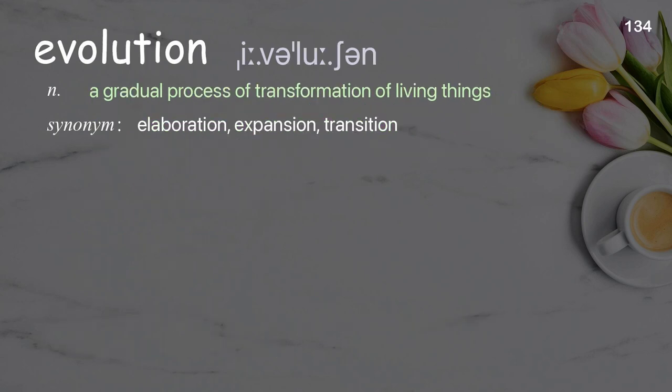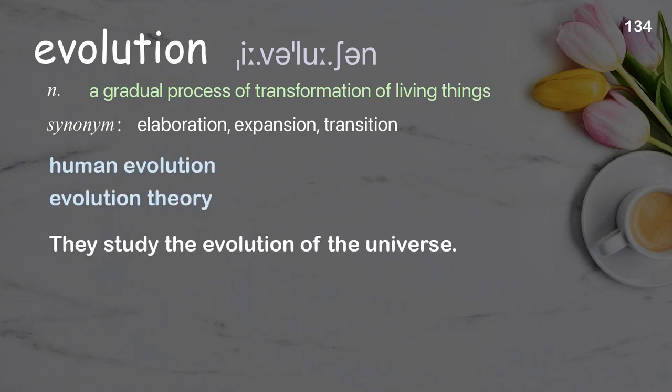Evolution. A gradual process of transformation of living things. Examples: human evolution, evolution theory. They study the evolution of the universe.